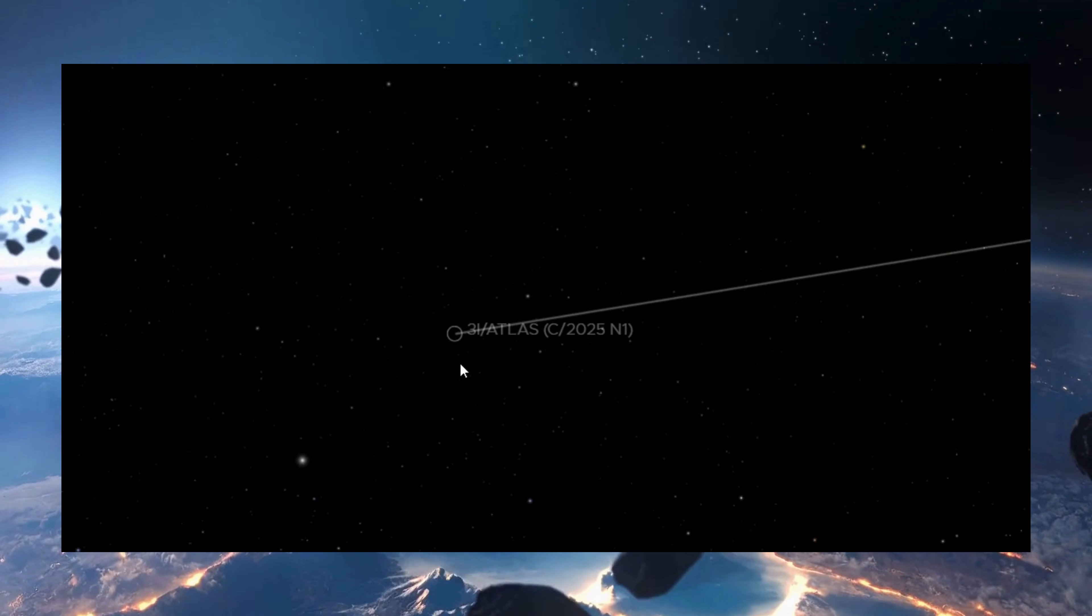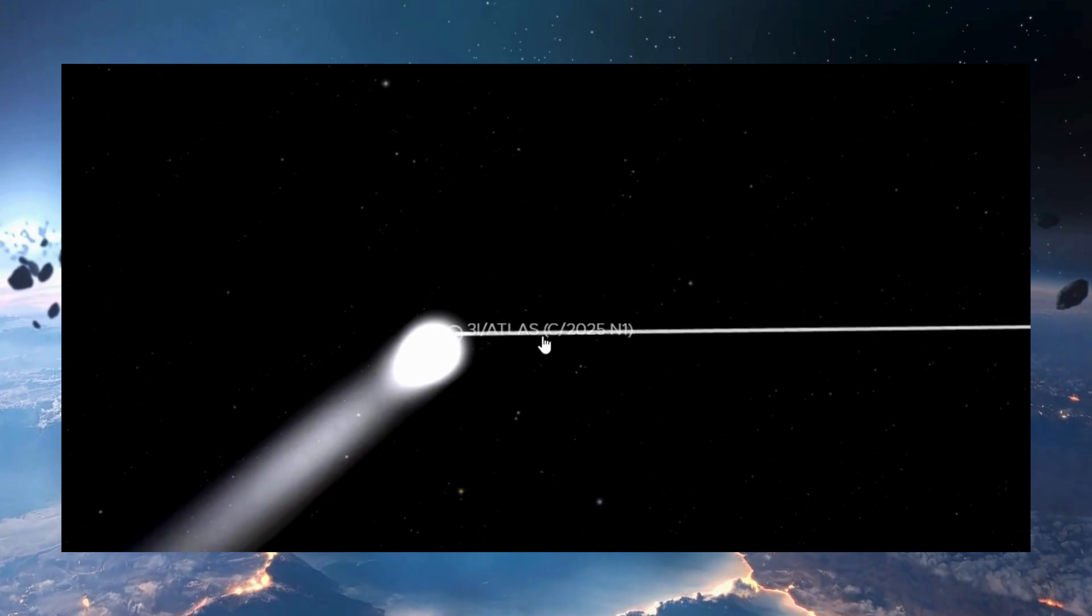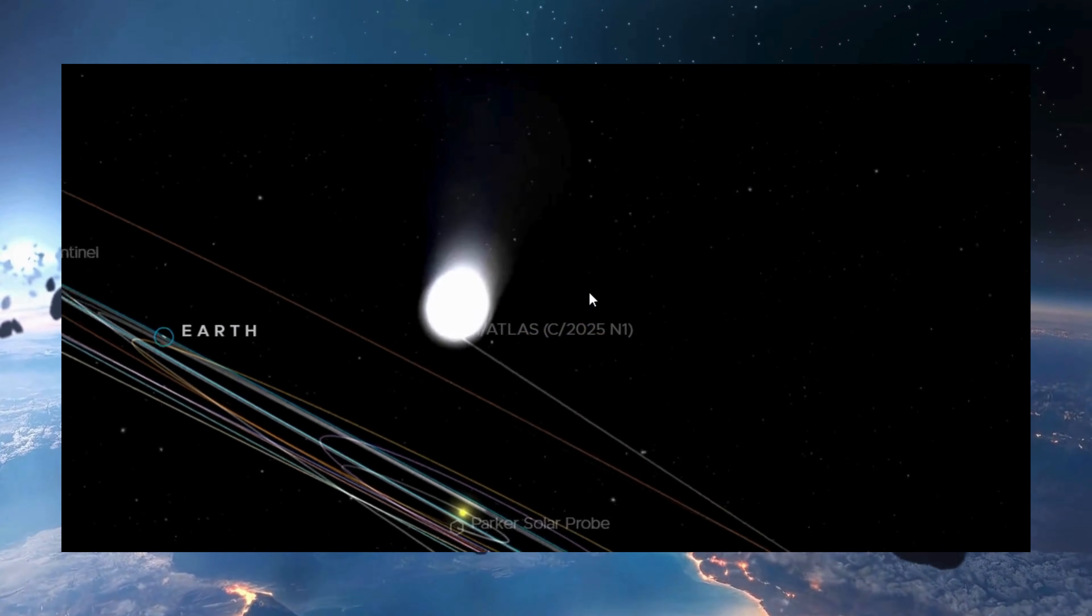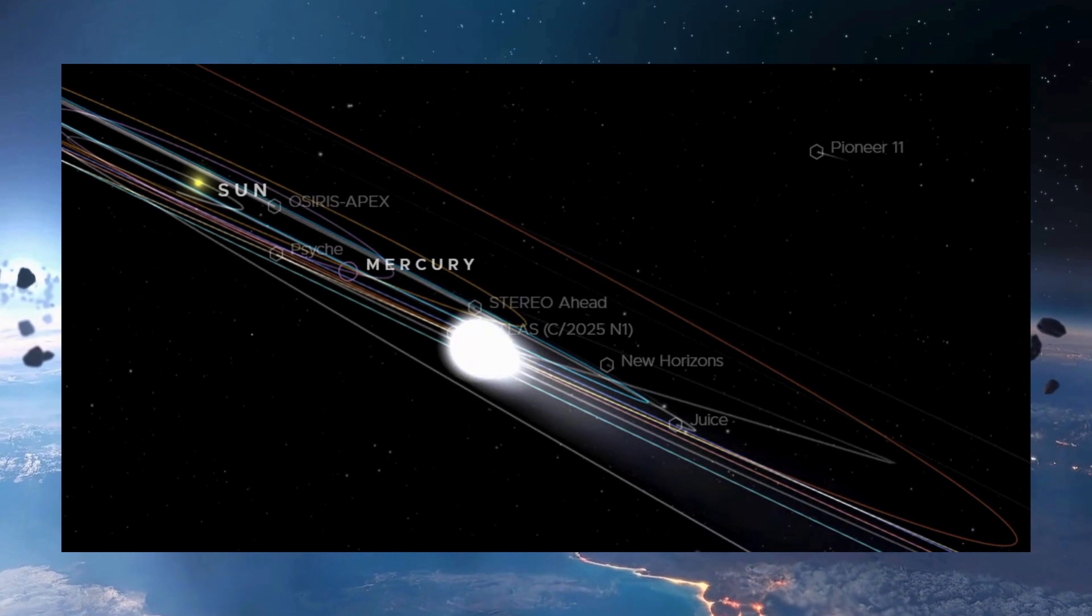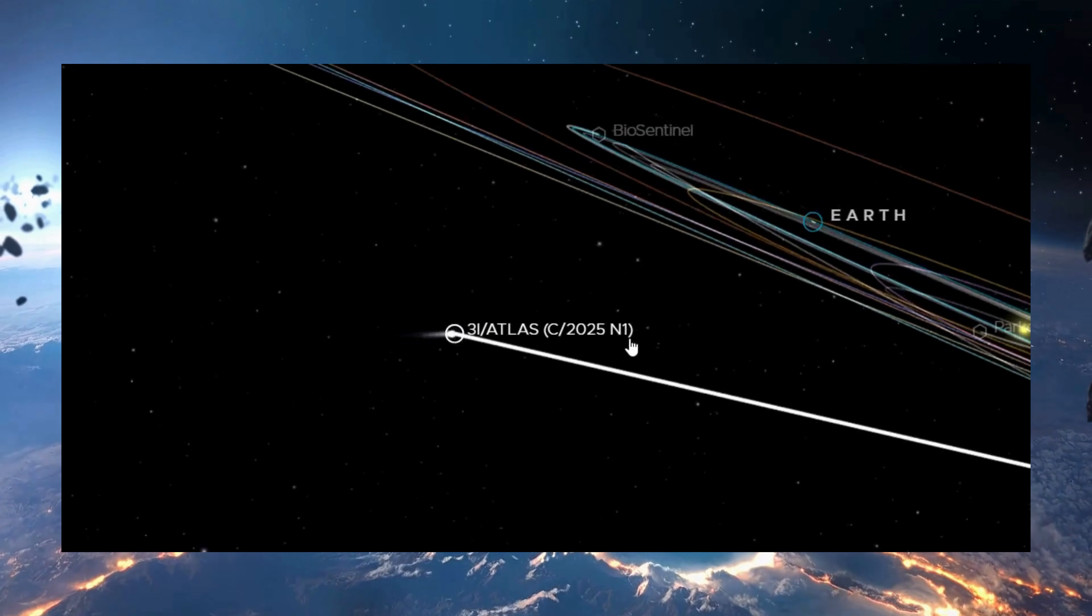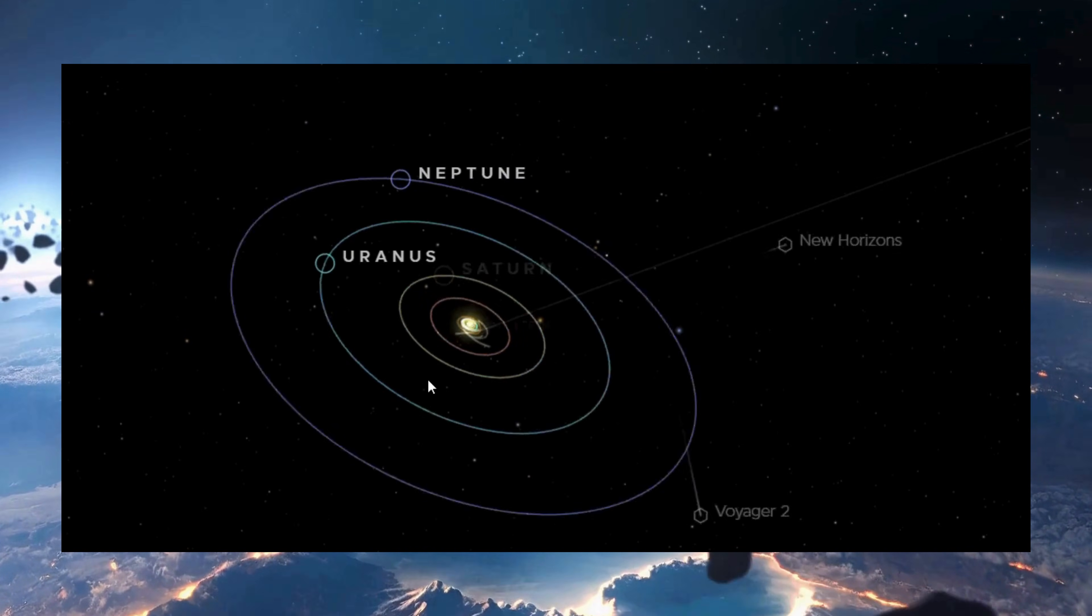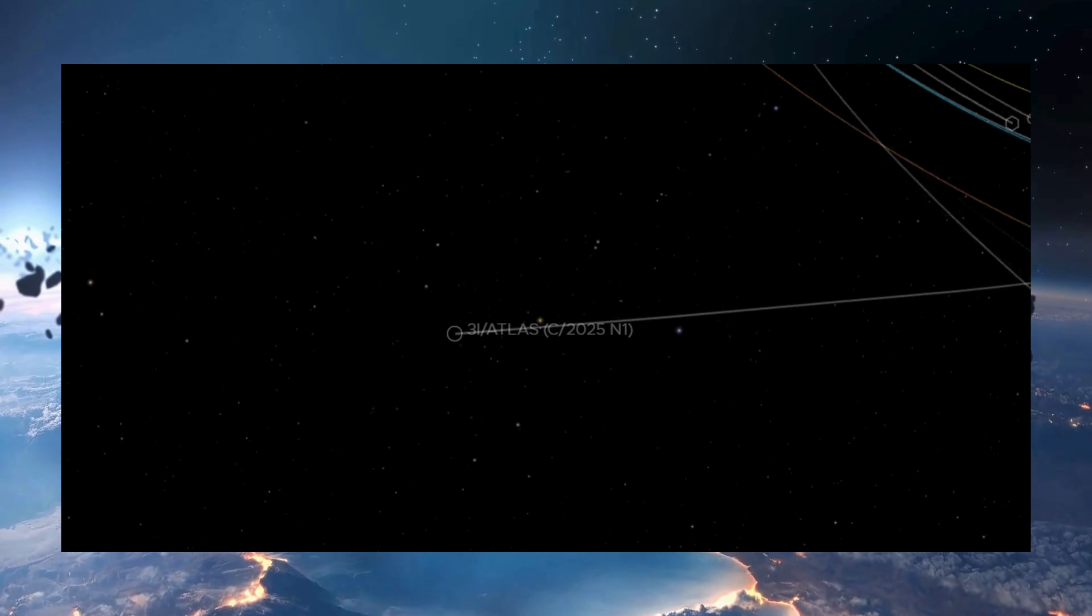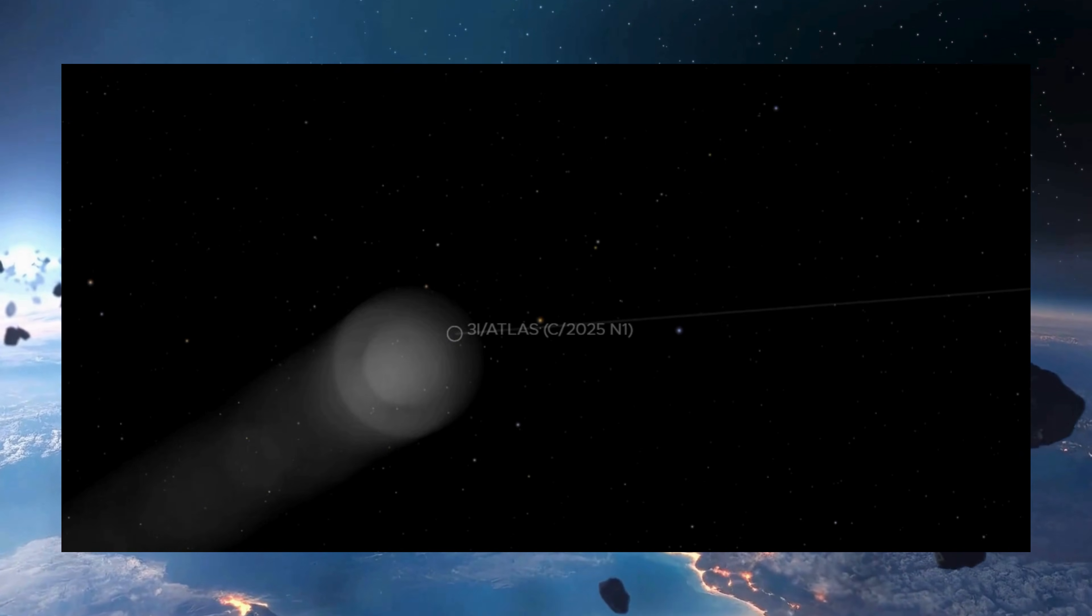Because if the acceleration truly was below detection limits during that time, then 3i/ATLAS must have been far more massive than the new December estimate suggests. A heavier object experiences less acceleration for the same outgassing force. Harvard astrophysicist Avi Loeb previously ran the numbers based on this exact scenario. His conclusion was striking. If the acceleration was below the observational threshold, then 3i/ATLAS must weigh at least 33 trillion kilograms. That's 33 billion tons.